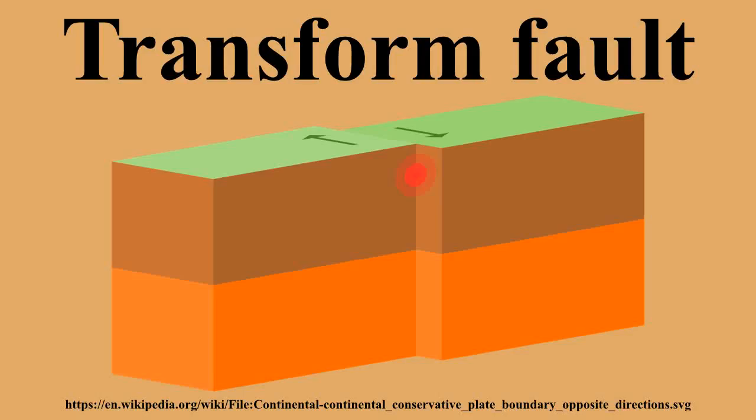Active transform faults are between two tectonic structures or faults. Fracture zones represent the previously active transform fault lines, which have since passed the active transform zone and are being pushed toward the continents. These elevated ridges on the ocean floor can be traced for hundreds of miles and in some cases from one continent across an ocean to the other. The most prominent examples of mid-oceanic ridge transform zones are located in the Atlantic Ocean between South America and Africa, known as the St. Paul, Romanche, and Ascension Fracture Zones — areas with deep, easily identifiable transform faults and ridges.